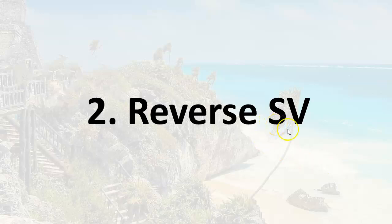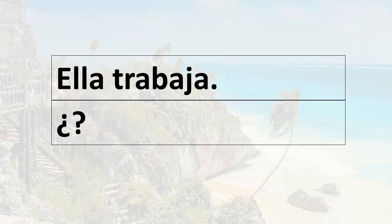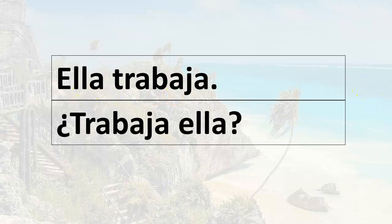The word order is: subject pronoun, conjugated verb. So let's look at this example. Ella trabaja — she works. All you have to do is reverse the word order. So trabaja would come first and then ella after that, and you have a question. Ella trabaja means she works; trabaja ella means does she work? It's a simple yes or no question.